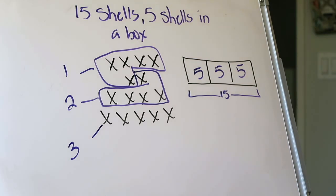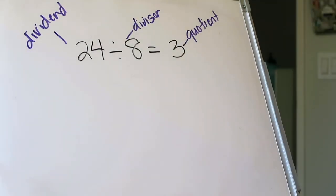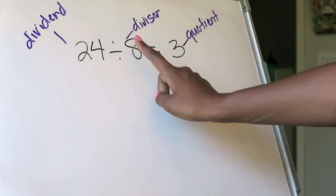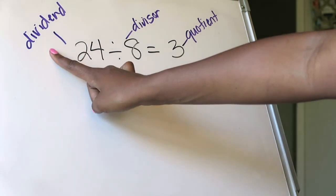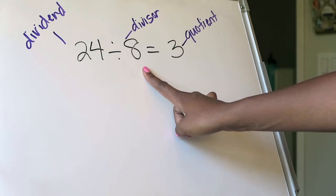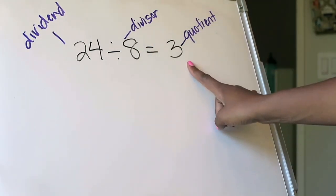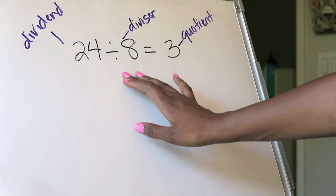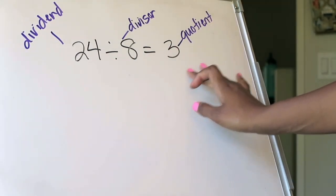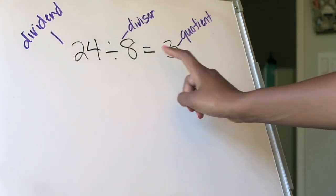The last part of this lesson is making sure we understand the different parts of a division problem. We have 24 divided by 8 equals 3. The number being divided — 24 — is called the dividend. The number doing the dividing — 8 — is called the divisor. The answer to the division problem — 3 — is called the quotient. So the dividend is divided by the divisor, and that gives you the quotient. You would read this as: 24 divided by 8, and your quotient is 3.